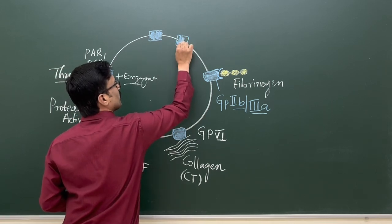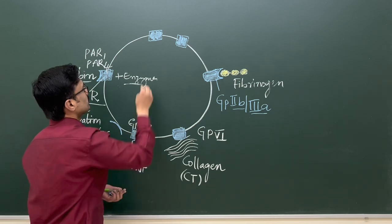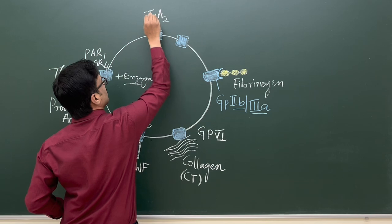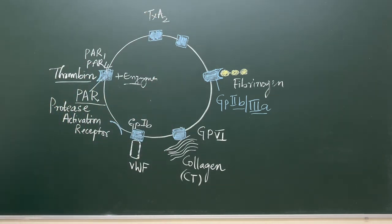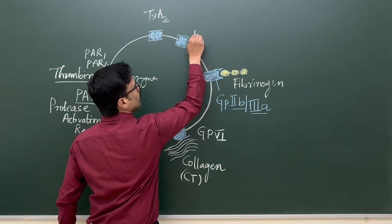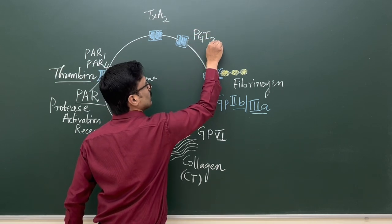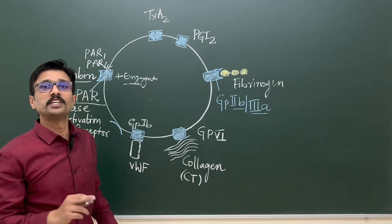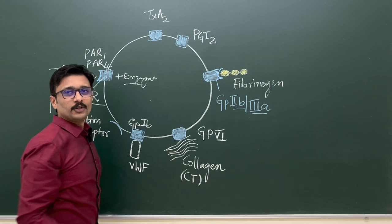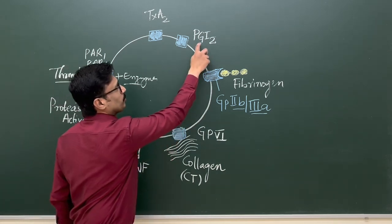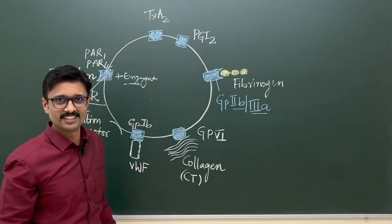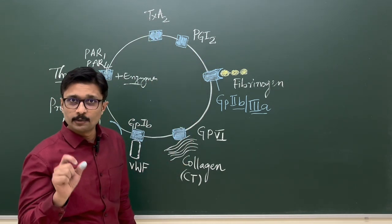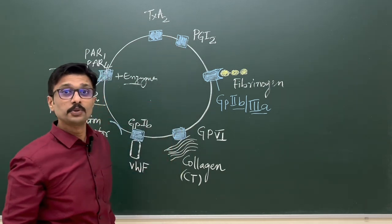There are also receptors for prostaglandins and prostacyclins over the membrane. One receptor is for Thromboxane A2, and another is for prostacyclin PGI2. Thromboxane A2 and prostacyclin are antagonistic to each other — Thromboxane A2 is an activator of platelets and a vasoconstrictor, whereas prostacyclin is an inhibitor of platelets and a vasodilator.